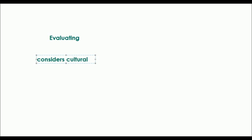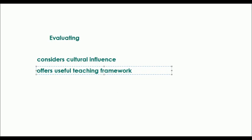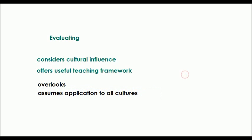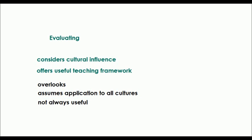Vygotsky's theory is quite useful in that it considers cultural influence, so it can be applied quite widely. It also offers a useful teaching framework, and the concept of the zone of proximal development is an interesting teaching tool. Some drawbacks are that it overlooks developmental processes that aren't social, for example genes which may guide development. The theory also assumes it can apply to all cultures, which may not be the case. Additionally, some ideas like scaffolding are not always applicable — sometimes it is necessary to learn through practice, where someone must be taken step by step through the entire process rather than building on partial information.